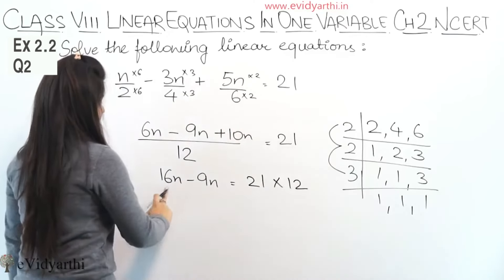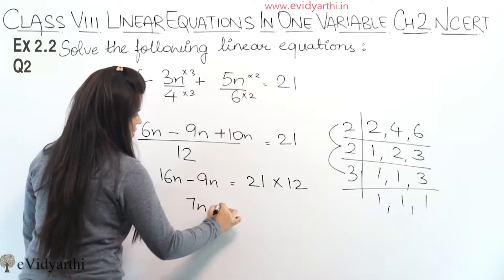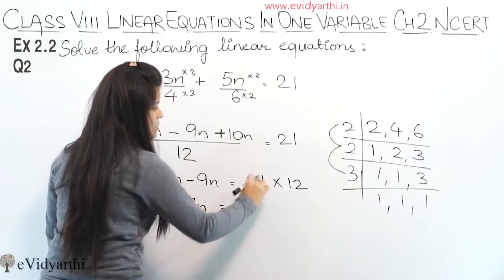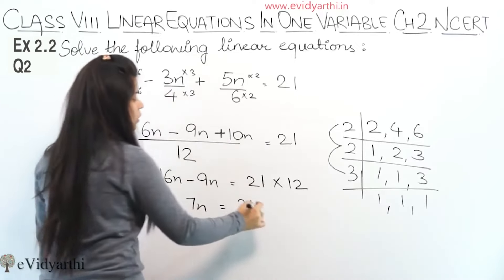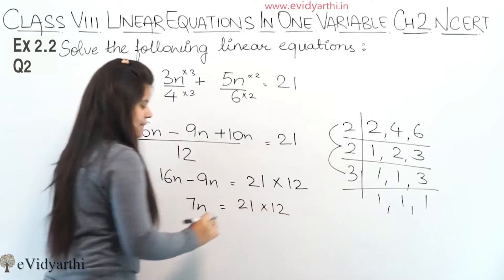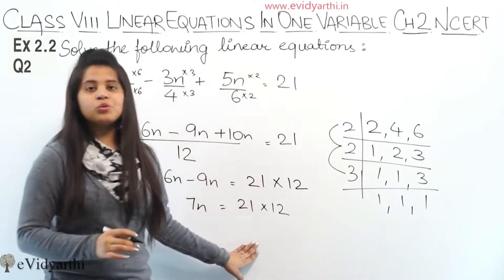So now we will get 16 minus 9 is 7. So 7n equals to 21. If you want to multiply, you can multiply it. And we can write it like this. So when we take it here, the calculation will be simple.